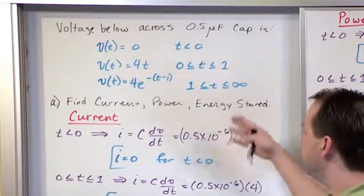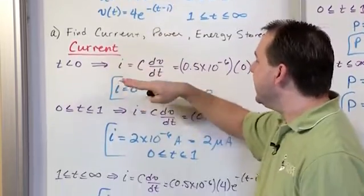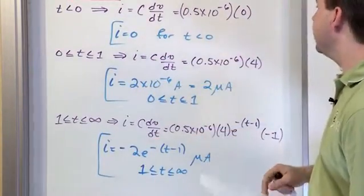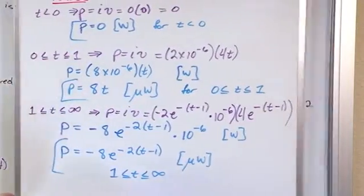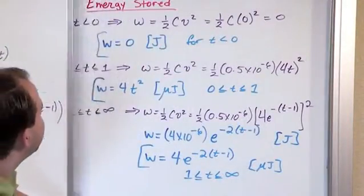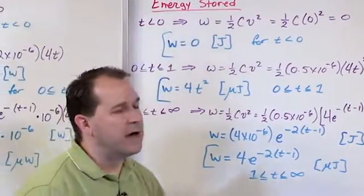And then in that problem we just solved, we found the current at each one of these instants in time in each one of these windows. We found the power at each one of these windows of time. And then over here we found the energy stored in each of those windows in time.